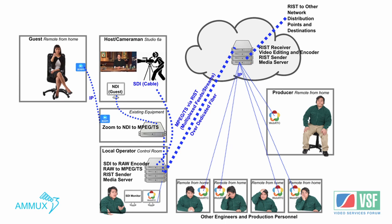The host sees the guest on a monitor directly from that feed as well for real-time feedback. The control room also picks up that local feed through an SDI monitor connected to the same feed that goes to broadcast.